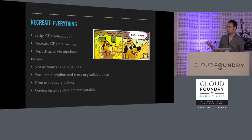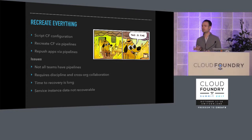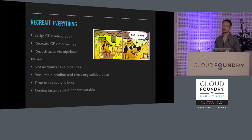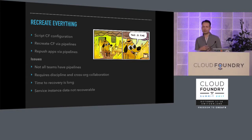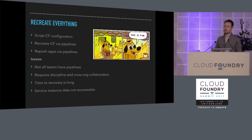Another option is just to do nothing — allow it all to burn down. If you script your CF deployment in the first place, when everything falls over you can just bring it back up again automatically, recreate your orgs, users, and spaces using scripts, and CI pipelines can re-push all your apps. That's great if you can get it to work, but it requires a tremendous amount of discipline. Not all teams have that discipline or pipelines. Cloud Foundry is a fun environment to play with — it's nice to just push an app, but if you do that without a corresponding pipeline, that app is just gone if CF fails. The time to recover is very long, and if you use service instances you're out of luck — none of that data is backed up because they're on separate BOSH releases.